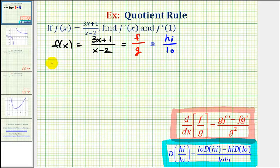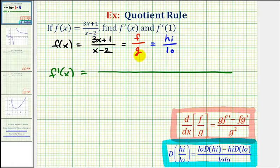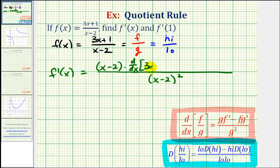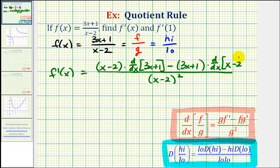So whichever formula we want to use, f prime of x is going to be equal to the function where the denominator is just the denominator squared — so we'd have the quantity x minus two squared — then the numerator is going to be the denominator times the derivative of the numerator, minus the numerator times the derivative of the denominator. We can look at this as g times f prime, minus f times g prime, divided by g squared, or low d high minus high d low, low low. Notice how for this first step, we wrote out the quotient rule but didn't find any derivatives.